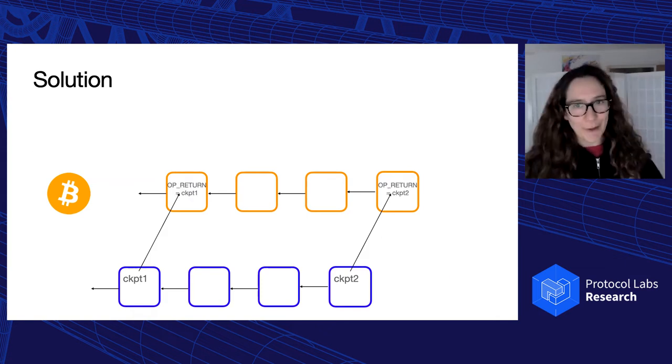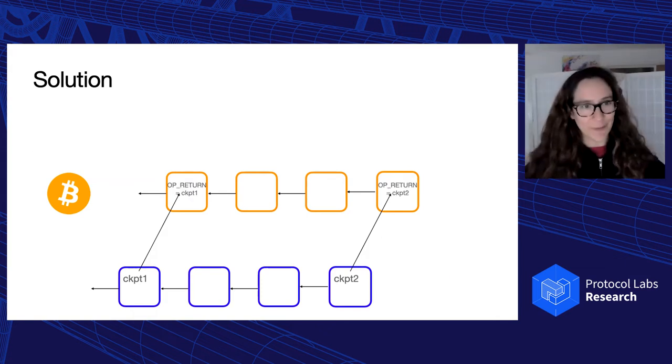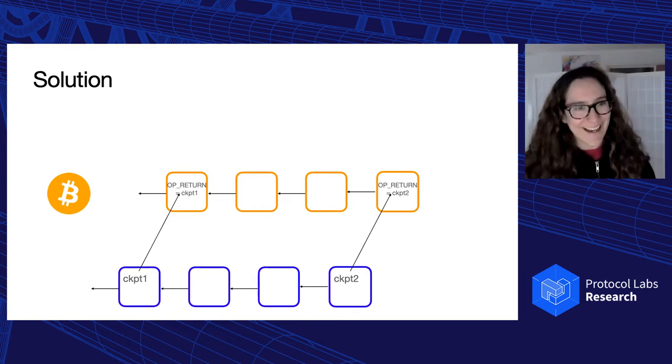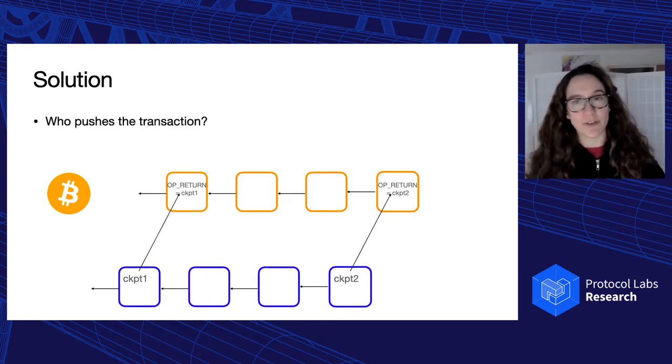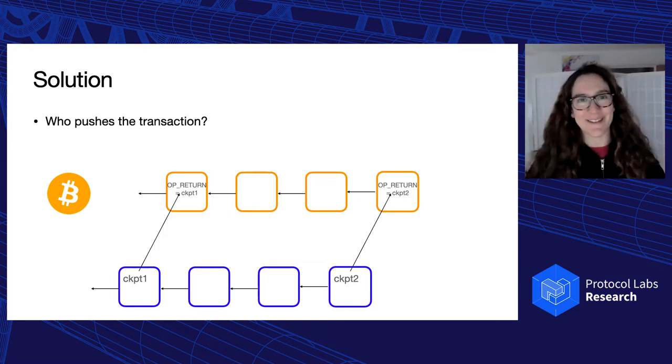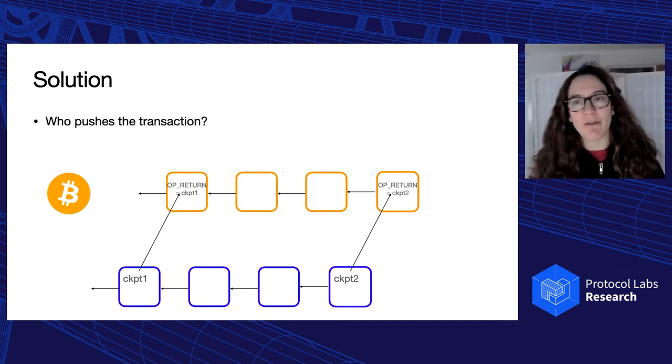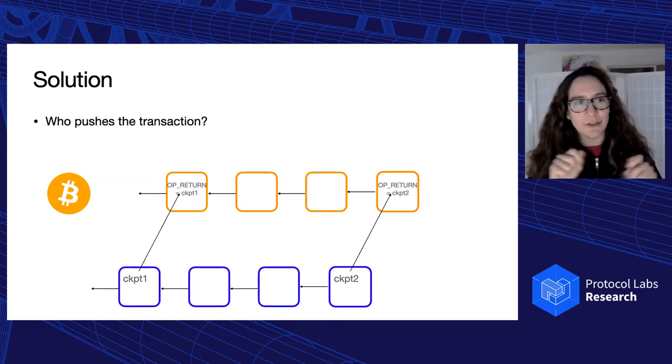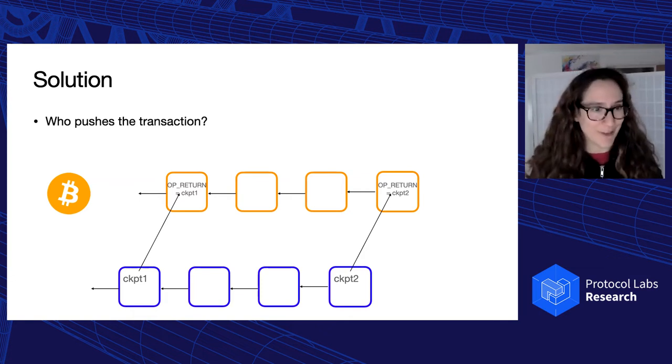So how do we do this? How do we do this checkpointing into the Bitcoin blockchain? And one of the main questions that we can ask is who pushes the transaction, right? Because we need to ensure that the checkpoint is valid. Not everyone can just say, oh, this is the checkpoint, obviously. And also, we want it to be decentralized. We don't want to have like one party that just update the checkpoint, for example, the developers of the proof-of-stake, because that's not like decentralized enough. And we want to have a decentralized solution.